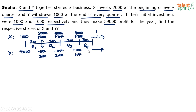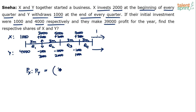Once you have understood this part, solving it becomes very easy. Profit is divided based on the ratio of investment and time. So profit of X : profit of Y equals X's weighted investment to Y's weighted investment. Calculate X's investment: 1,000 × 3 + 3,000 × 3 + 5,000 × 3 + 7,000 × 3.